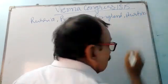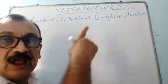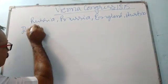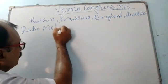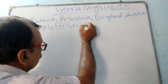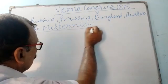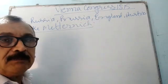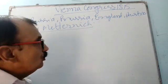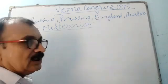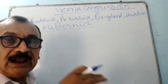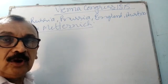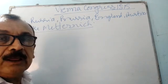At that time, the Chancellor of Austria-Hungary was Duke Metternich. He was the host of this Vienna Congress. Vienna is the capital of Austria, so all the delegates of these four countries met at Vienna to draw up a new settlement for Europe in the post-Napoleon era.